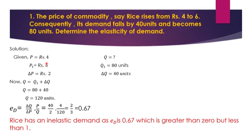The current price is rupees 6 and the initial price was rupees 4. The demand falls by 40 units due to the increase in price. The current quantity demanded is 80 units, and the change in demand is 40 units. Therefore the original quantity demanded was 80 plus 40, which comes to 120 units.